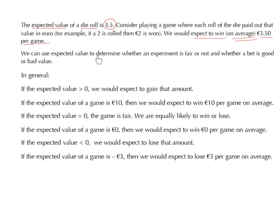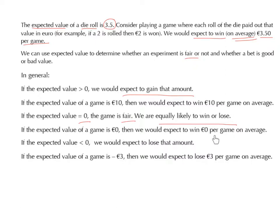We can use expected value to determine whether an experiment is fair or not, and whether a bet is good or bad value. In general, if the expected value is greater than zero, we would expect to gain that amount — for example, an EV of 10 euro means we expect to win 10 euro per game on average. If the expected value is equal to zero, the game is fair — we are equally likely to win or lose. If the expected value is less than zero, we would expect to lose that amount — for example, an EV of minus three euro means we expect to lose three euro per game on average.